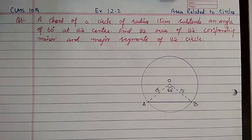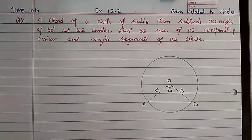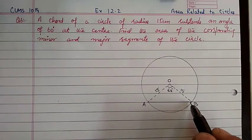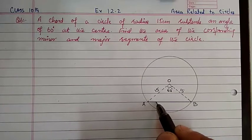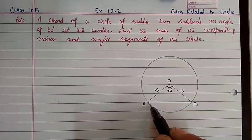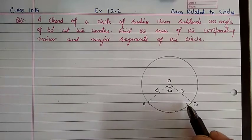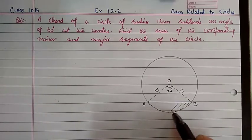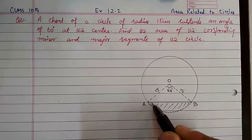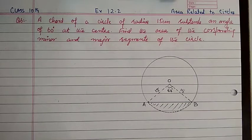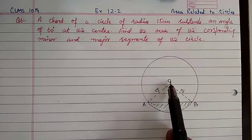We need to find the area of the corresponding minor segment and major segment. A segment is the region between the chord and its corresponding arc — the area between the arc and the chord. We need to find this area.